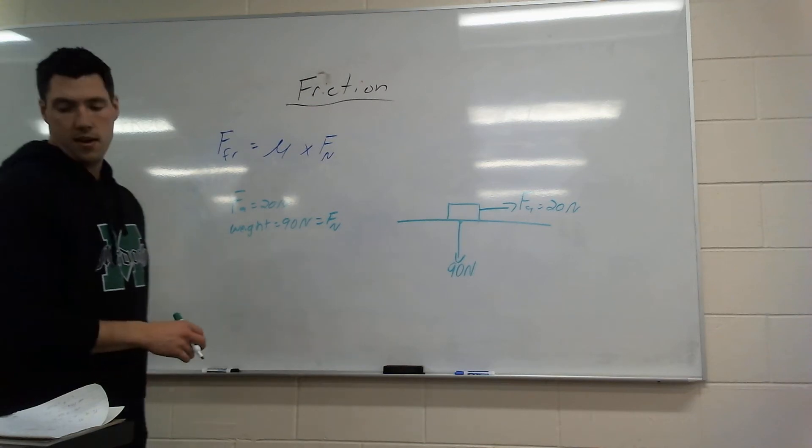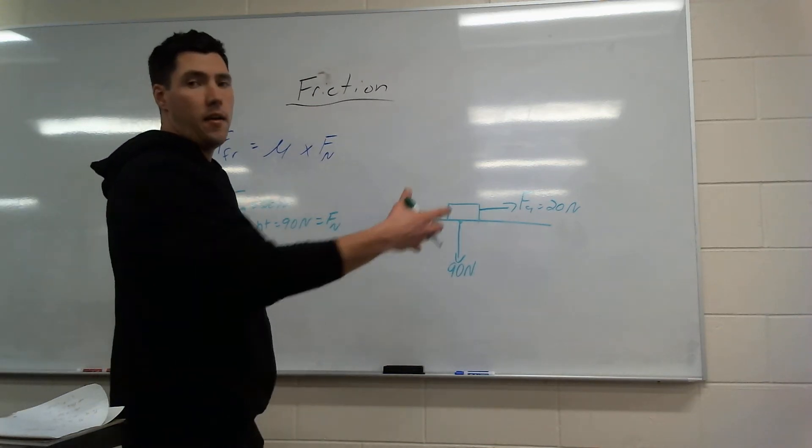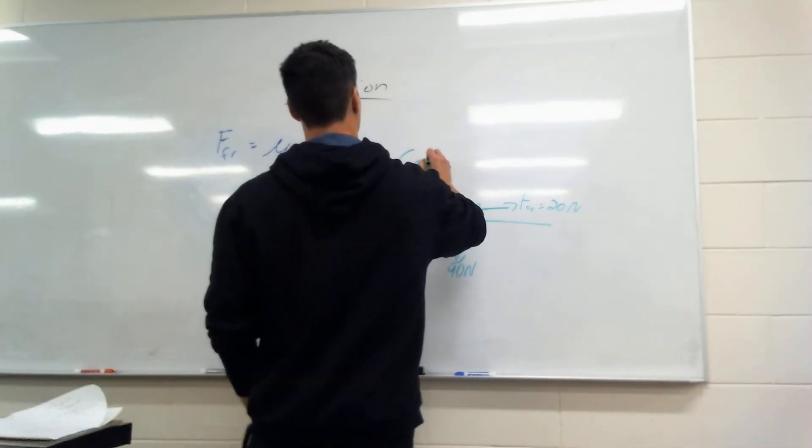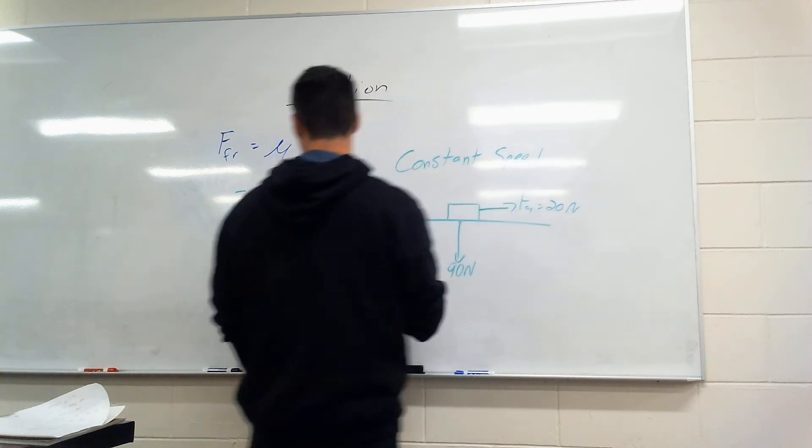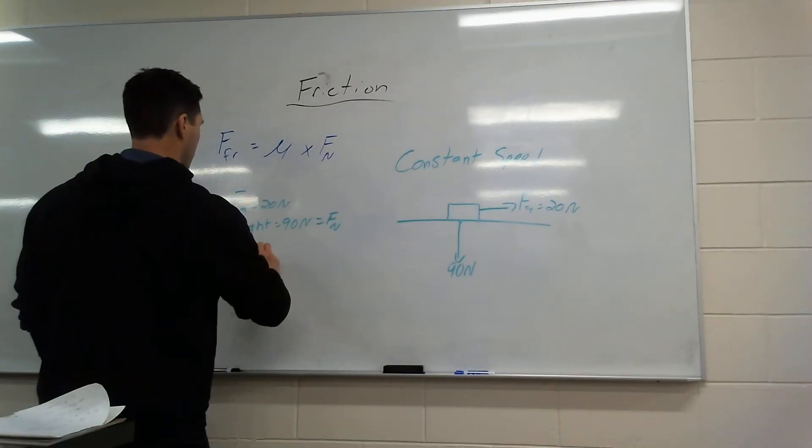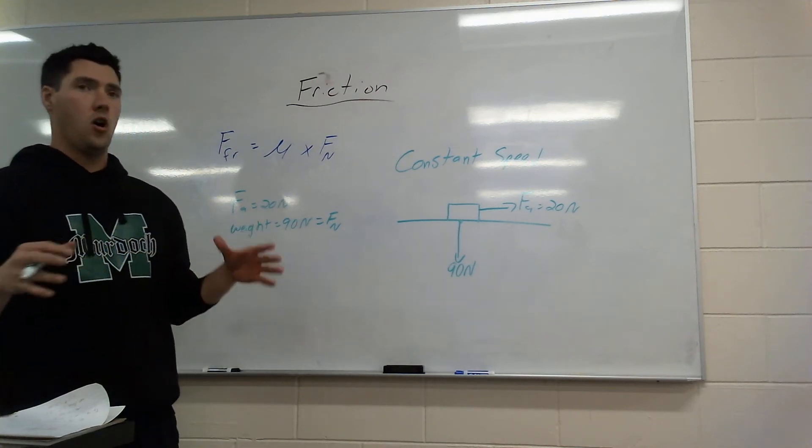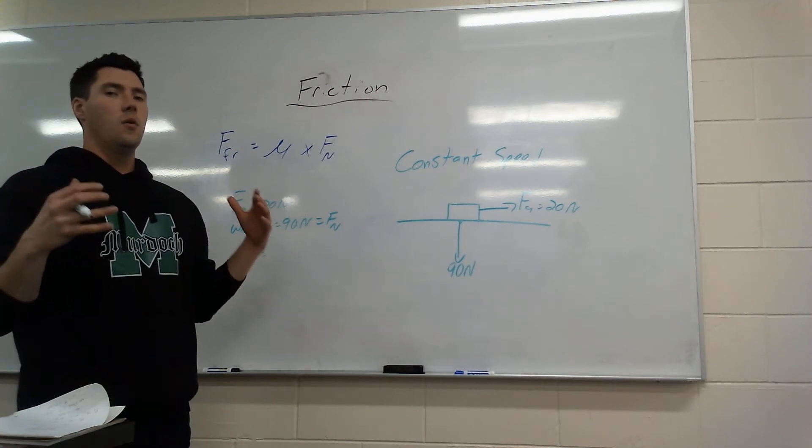The last thing is it says we have a constant speed. So we have this thing happening here, and there's a constant speed, which is hugely important. It gives us a very important piece of our puzzle. It is asking, what is the mu? So if we are pulling with 20 newtons and we're at a constant speed, there's no change in acceleration. What is our mu?